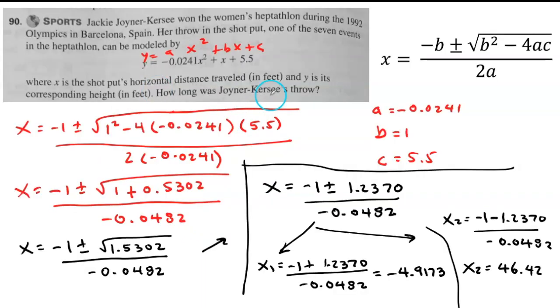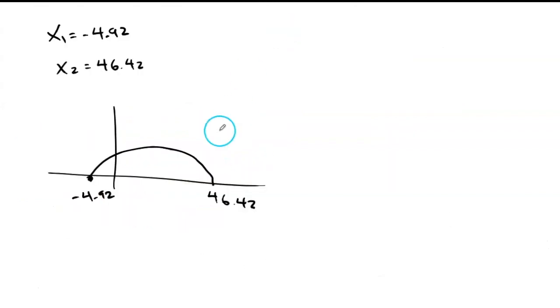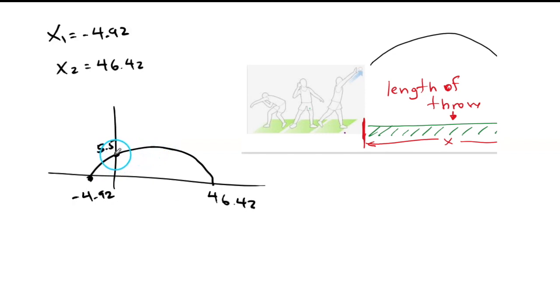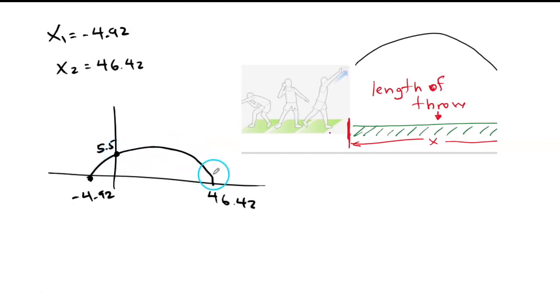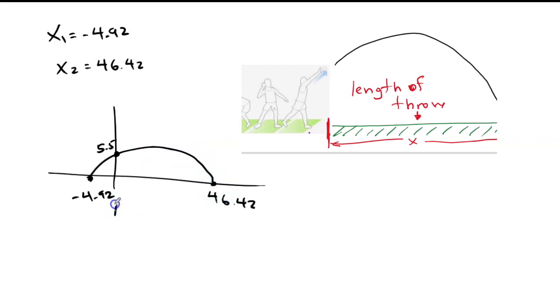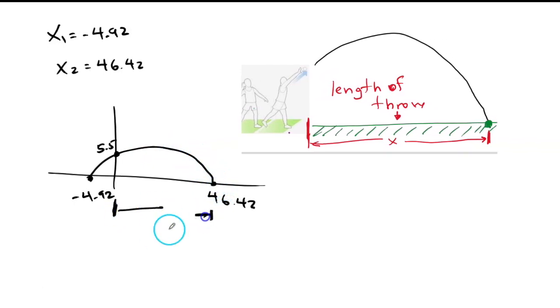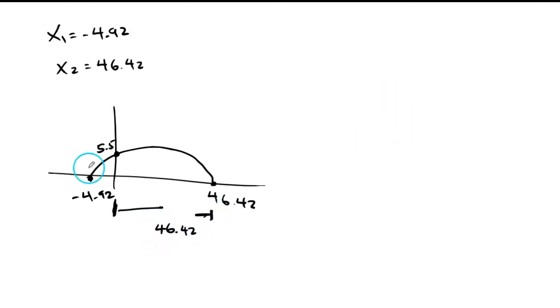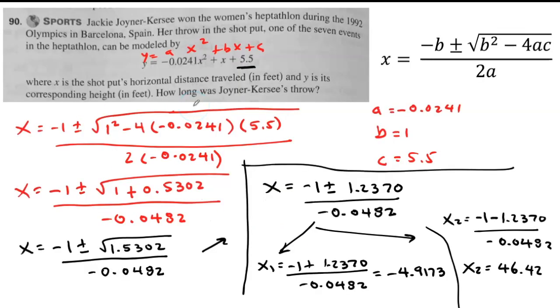If you notice, when x is zero, this will cancel out, this will cancel out. The y will be 5.5. This is the height that she threw from, 5.5. So she threw the shot put from a height at 5.5 and it landed at 46.42. So the distance technically is from here to here, which is 46.42. We don't have a negative distance. So my final answer is 46.42 feet, and that's our answer.